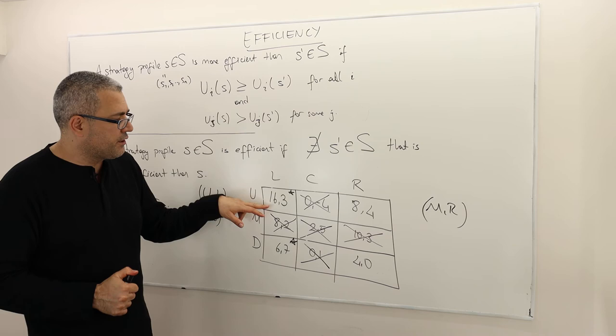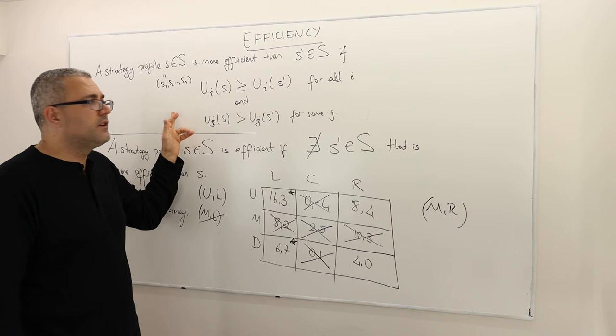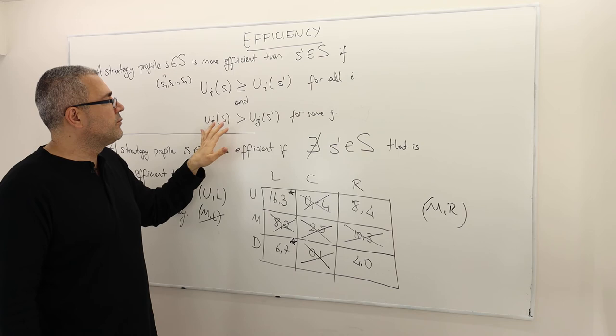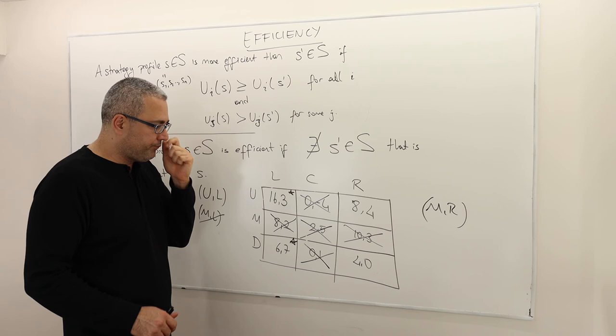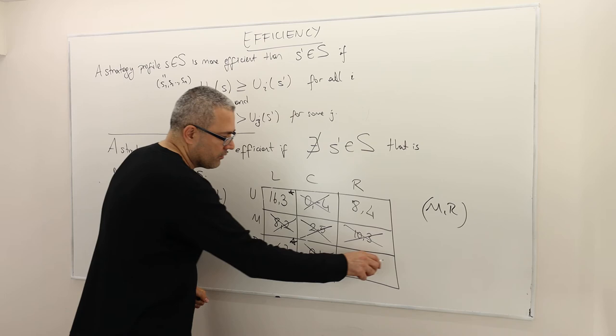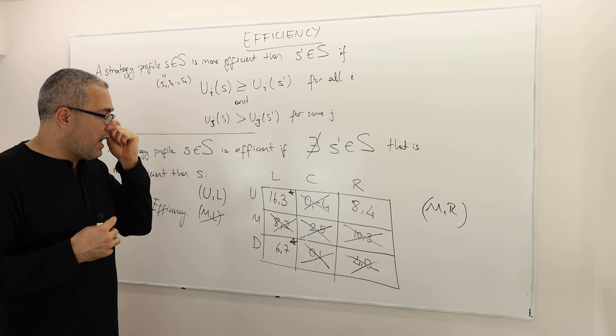MR — 10-3 — is not efficient. Why? Because there is a more efficient strategy profile, which is UL. The second player gets exactly the same payoff, but the first player gets strictly better payoff. So according to the definition, at least one player — player one — says playing S gives me higher payoff. Therefore, MR is not an efficient payoff. And DR is also not efficient — for example, UR is more efficient than DR. So in this game there are only three strategy profiles that are efficient.